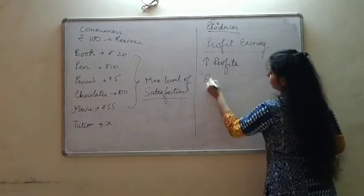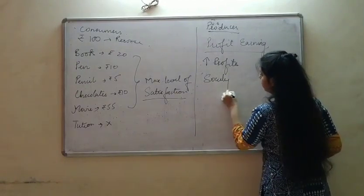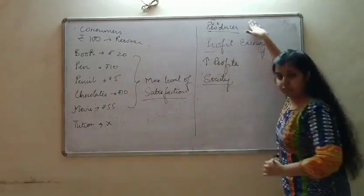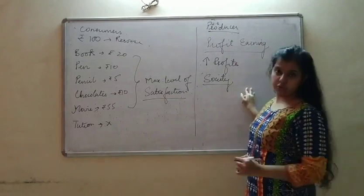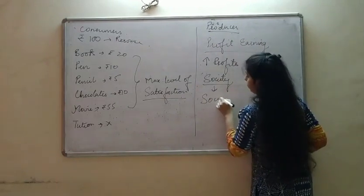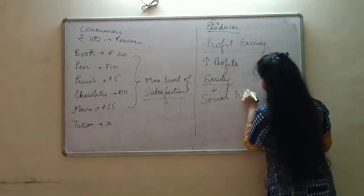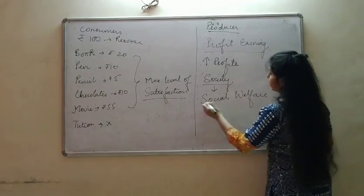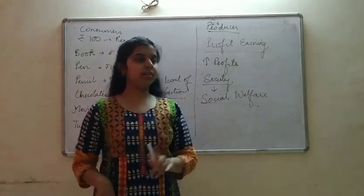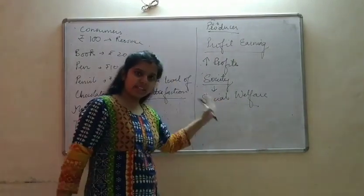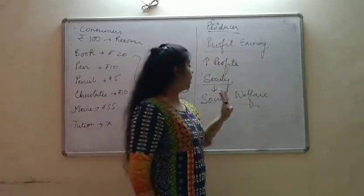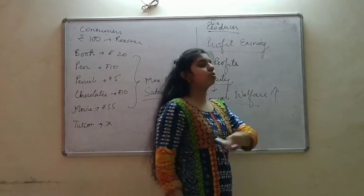And third is the society. The definition is divided into three categories: from the point of view of the consumer, from the point of view of the producer, and now from the point of view of society. What does society need? Social welfare. Society wants social welfare. A good economy is one that provides maximum satisfaction of the consumer, maximum profits for producers, and maximum social welfare for society.